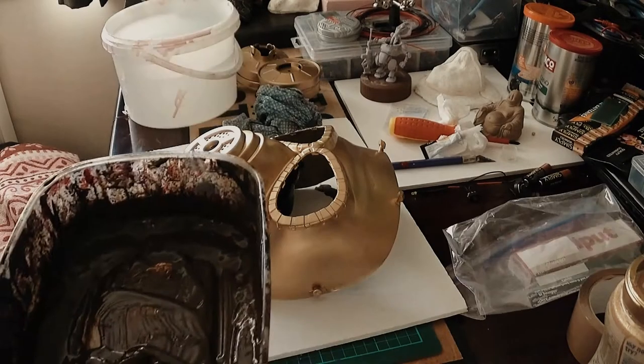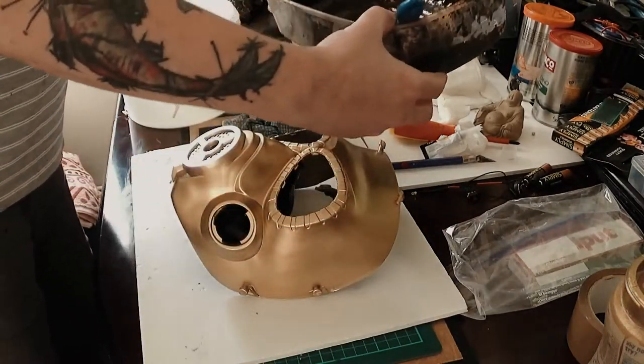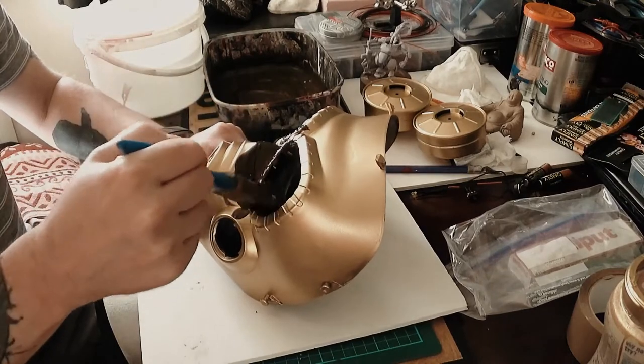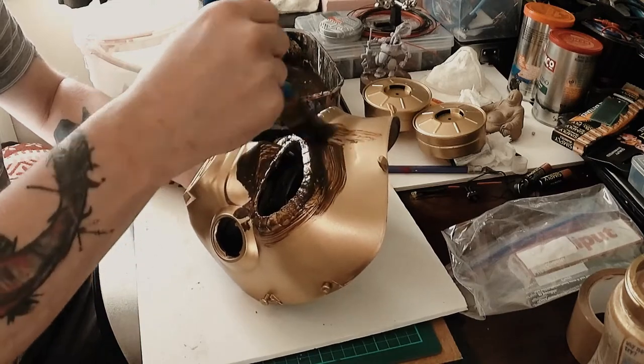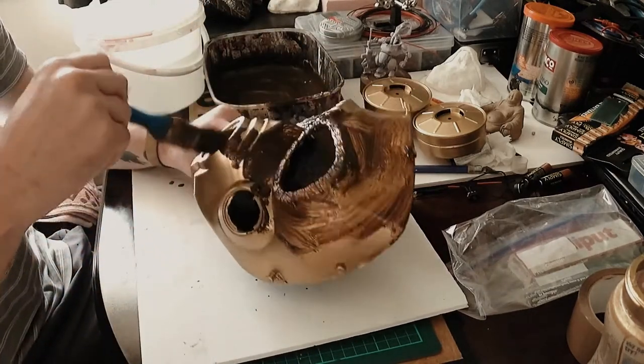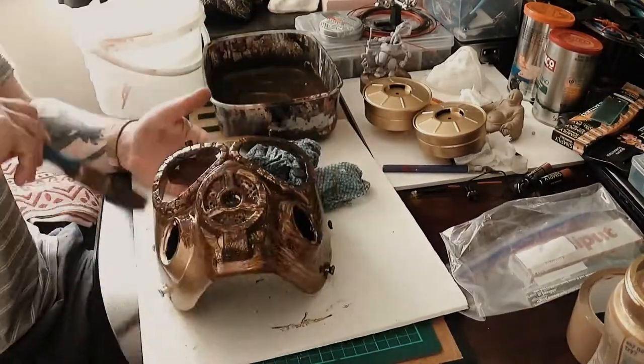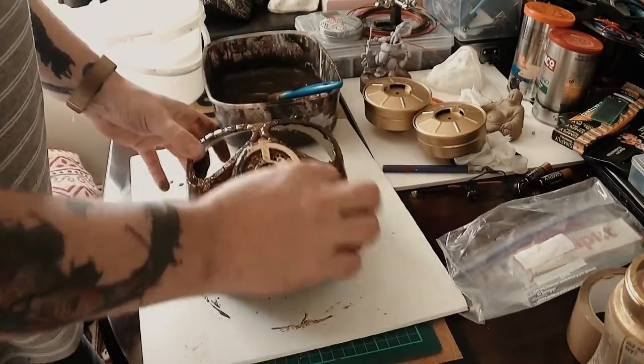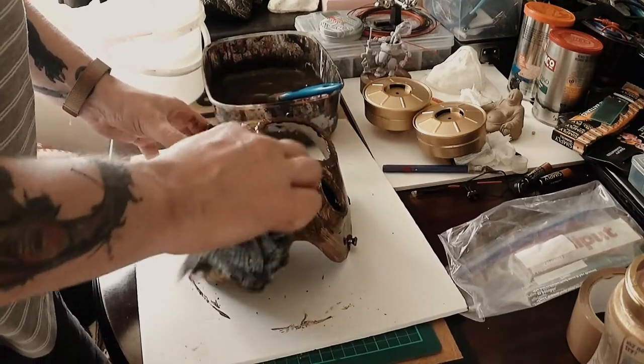A couple of coats of primer, let that dry overnight, and then a couple of coats of the gold metallic paint, let that dry overnight also. Now we're ready to add some paint effects. So I mixed up some black and brown so you've got a kind of dark brown there. That's acrylic paint and we're just going to liberally paint that over the mask and then we'll wipe down with a damp cloth.